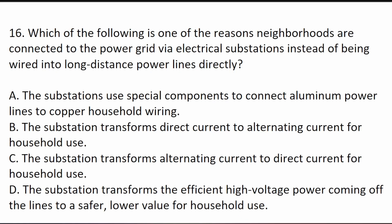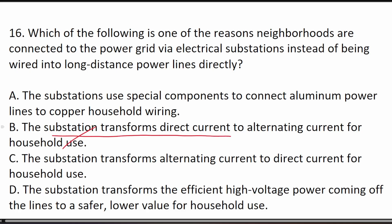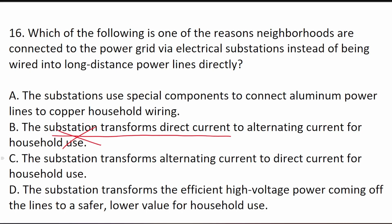Question 16 asks: which is one of the reasons neighborhoods are connected to the power grid via electrical substations instead of being wired into long-distance power lines directly? Those power lines carry alternating current. Answer A is wrong — substations don't convert AC to DC (homes use AC). Answer C is incorrect — not all households use copper wiring. The correct answer is D: the substation transforms the efficient high-voltage power coming off the power lines to a safer, lower voltage value for household use.